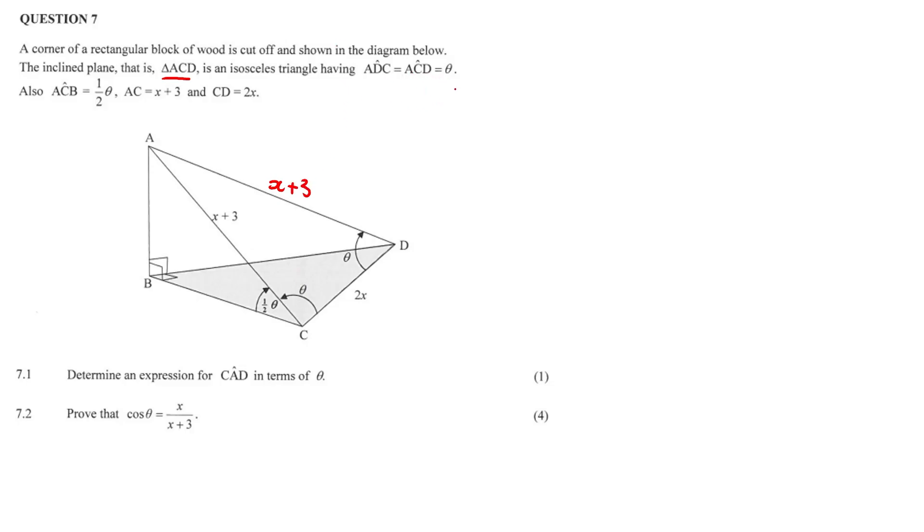Now having angle ADC equal to angle ACD equal to theta, we just discussed that. Also angle ACB is equal to half theta. It's drawn for you. Remember if it's not drawn, just draw it in yourself. AC is equal to x plus 3 and CD is equal to 2x.